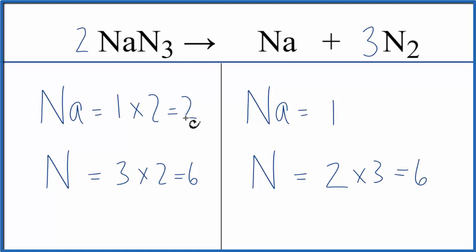And then sodiums, we have 2 over here and just 1. Put a coefficient of 2, 1 times 2. That gives us 2.